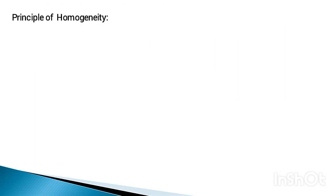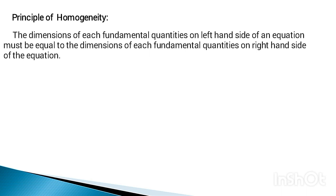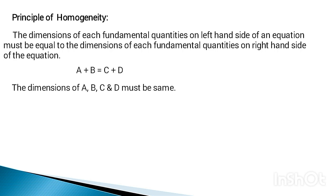First of all, what is the principle of homogeneity? The principle of homogeneity states that the dimensions of each fundamental quantity on the left-hand side of an equation must be equal to the dimensions of each fundamental quantity on the right-hand side of the equation. Suppose we have an equation a + b = c + d; then the dimensions of each term — a, b, c, and d — must be the same.